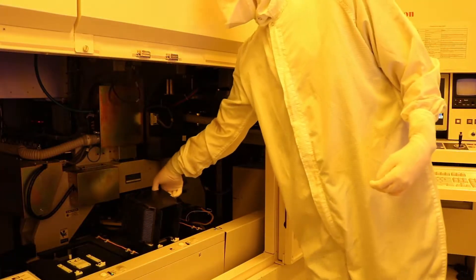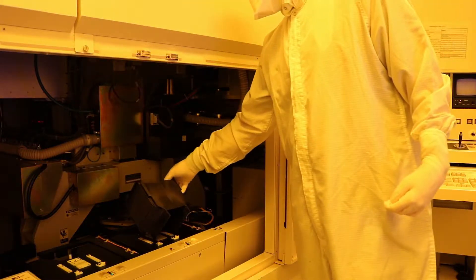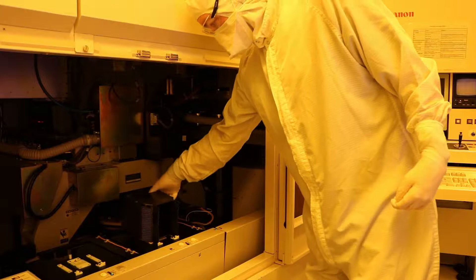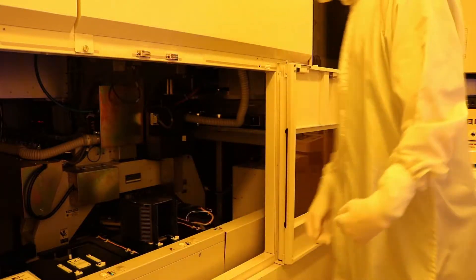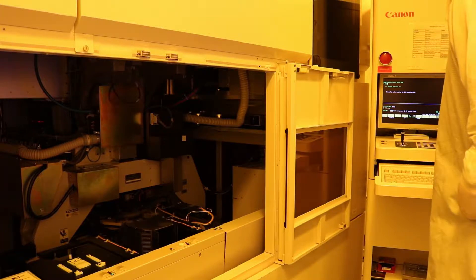To expose the photoresist on the wafers, we use a Canon i-line stepper. This tool allows us to print on 200mm diameter wafers patterns that are as small as 400nm with 150nm overlay accuracy.